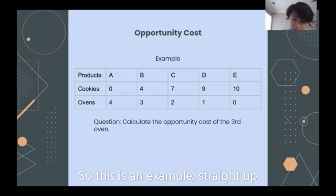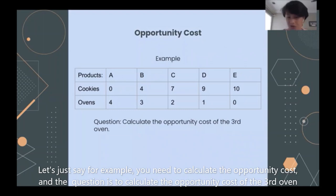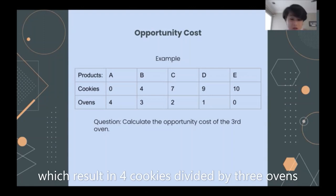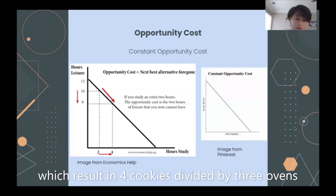So this is an example. Let's just say, for example, you have to calculate the opportunity cost in this case. And the question is calculate the opportunity cost of the third oven. So to calculate the opportunity cost to produce three ovens, you have to divide the number of cookies lost by the numbers of oven gained in this scenario, which result in three cookie divided by one oven. Therefore, opportunity cost of the third oven is three.